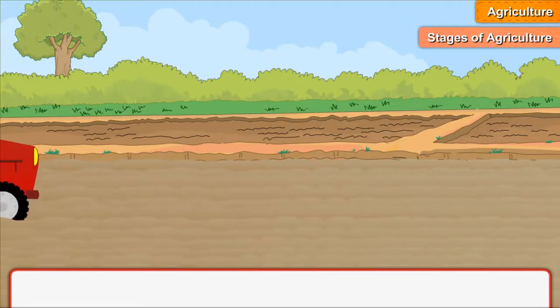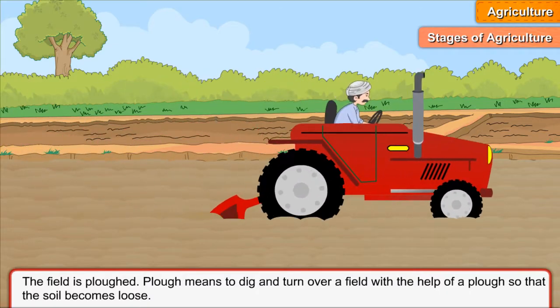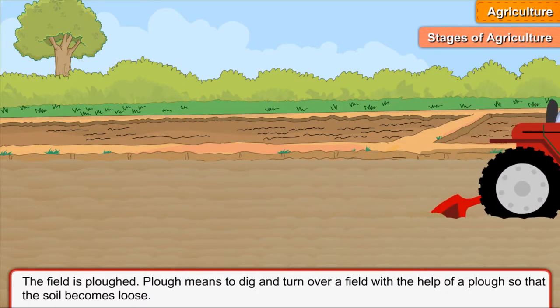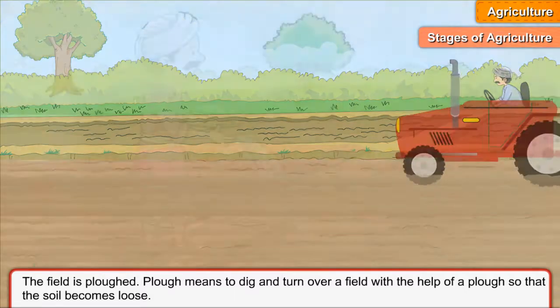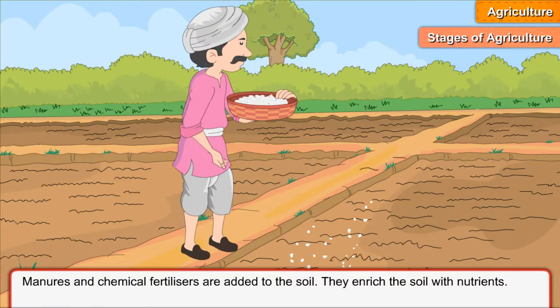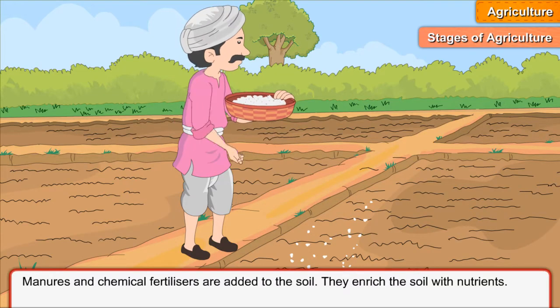Stages of Agriculture: Various stages of agriculture are given here. The field is ploughed. Plough means to dig and turn over a field with the help of a plough so that the soil becomes loose. Manures and chemical fertilizers are added to the soil. They enrich the soil with nutrients.